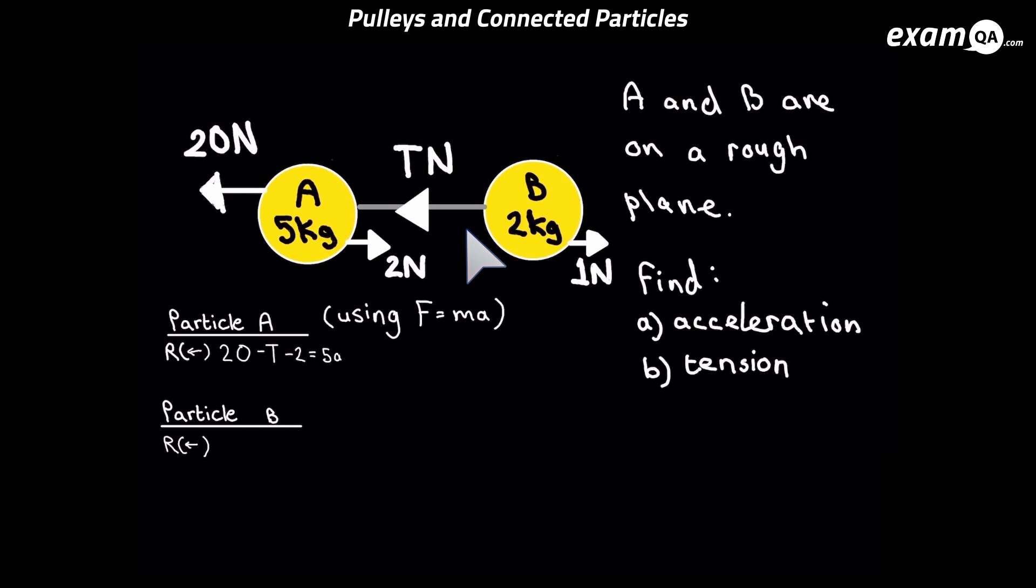So what are all the forces on B? It's the tension we mentioned, and it's that 1 Newton to the right. That's all the forces we have on B. When we're looking at particle B, we don't even consider that 20 Newtons or the 2 Newtons because they're not actually acting on B.